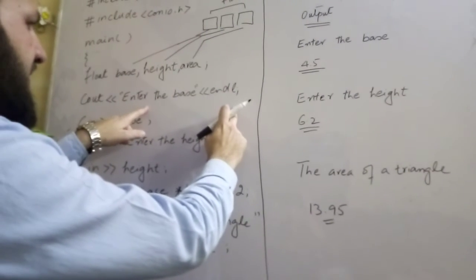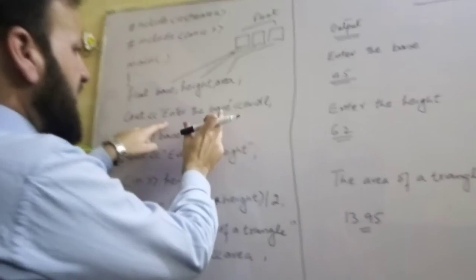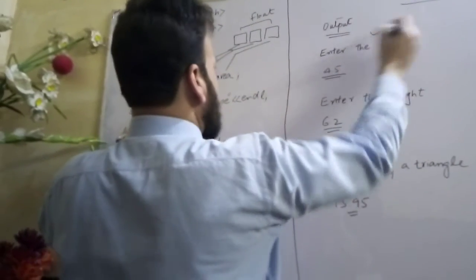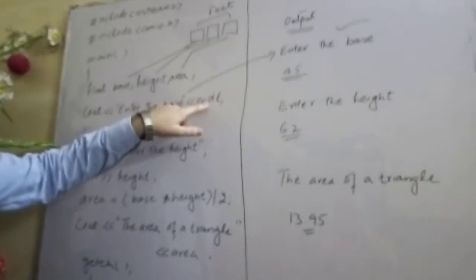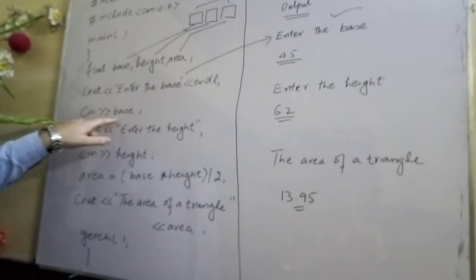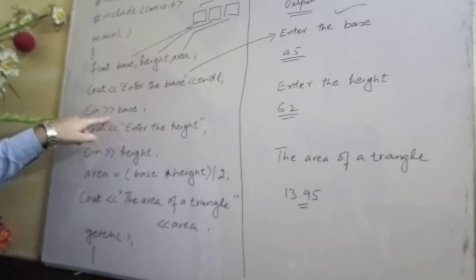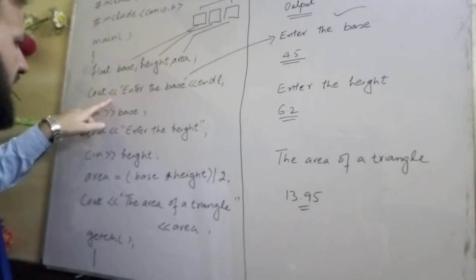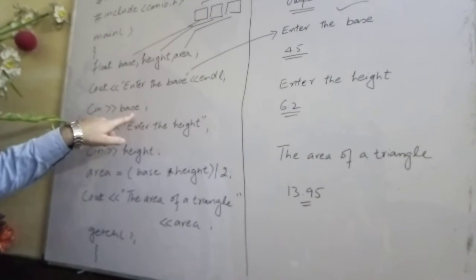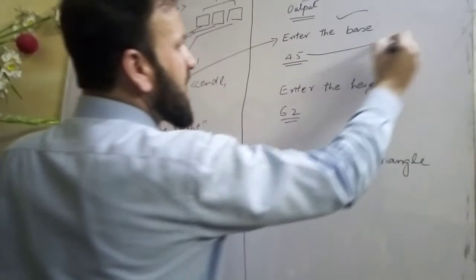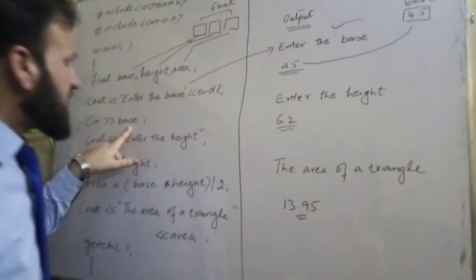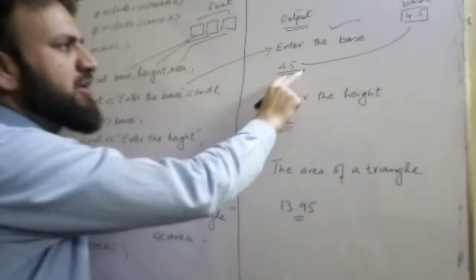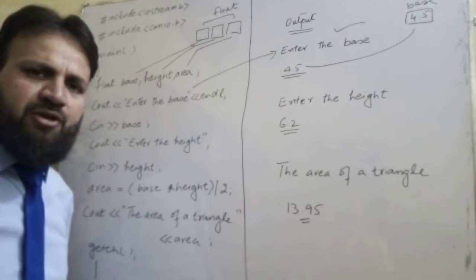In this previous statement, cout will display the message 'enter the base' and then endl, and the control will be automatically in the next line. The insertion operator and the extraction operator will be used. Since we have declared this data type float, we can enter float values, which are decimal values.